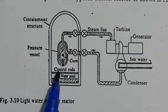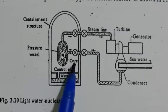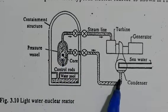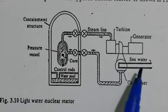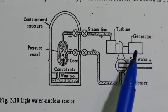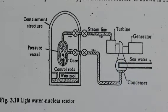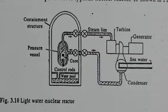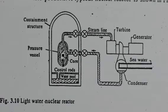Here you can observe a typical nuclear reactor. The control rods and the nuclear core are labeled. This also shows the condenser and the generator. This is an example of the light water reactor.